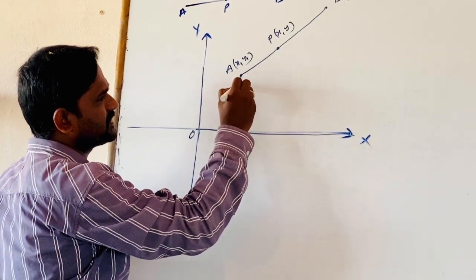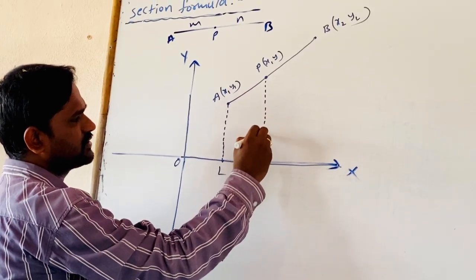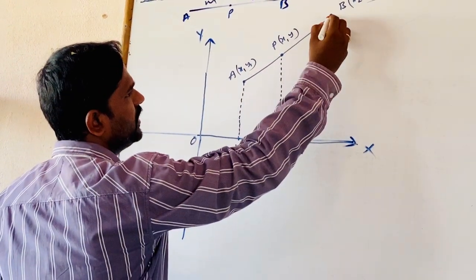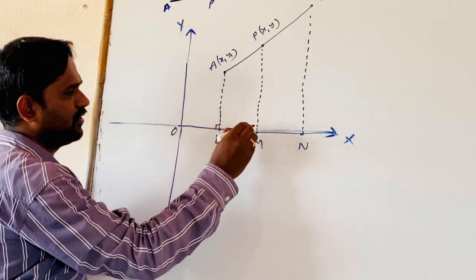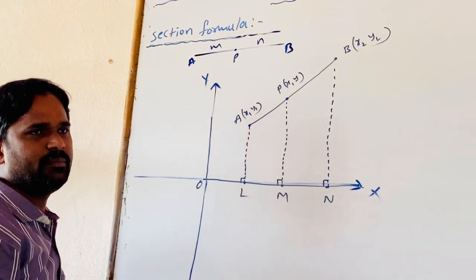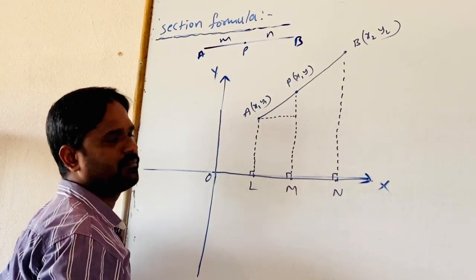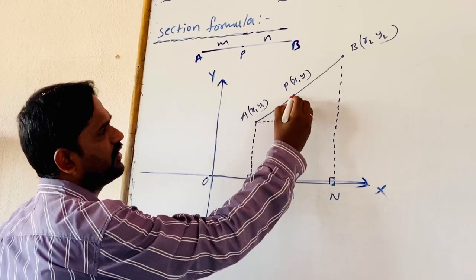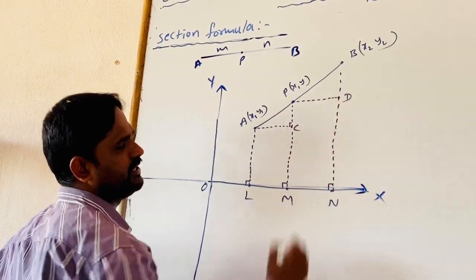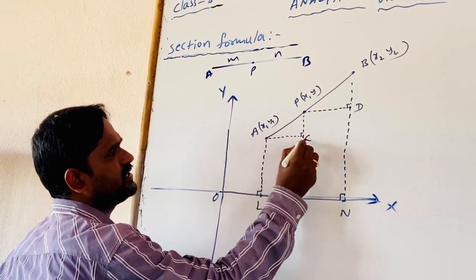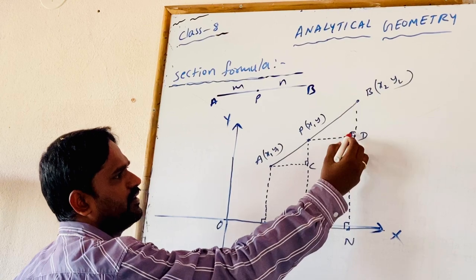Draw a perpendicular from A to the X axis; it intersects X at L. From P, draw a perpendicular to the X axis; it intersects at M. From B also we draw a perpendicular; it intersects at N. These are the perpendiculars drawn from A, P, B to the X axis. Draw horizontal lines parallel to the X axis from A to intersect PM, and from P to intersect BN, intersecting at points C and D. Clearly, triangle ACP is a right angle triangle with angle C equal to 90 degrees, and triangle PDB is a right angle triangle with angle D equal to 90 degrees.